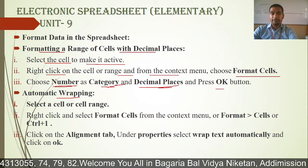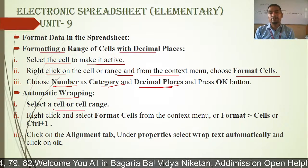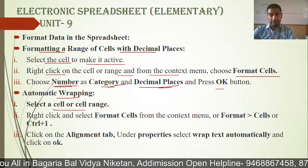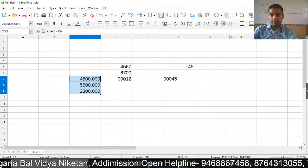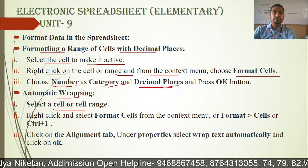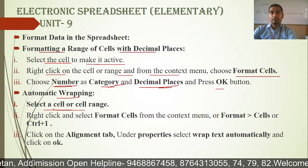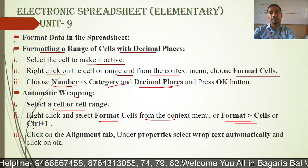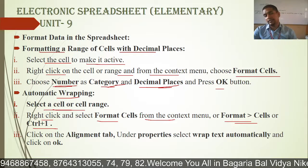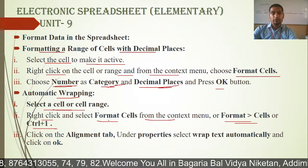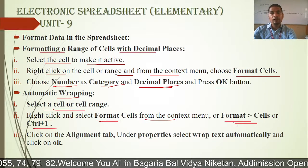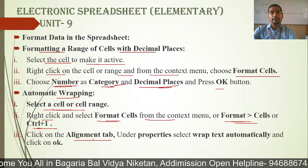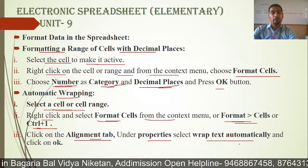Next is automatic wrapping. Select the cell. What is wrapping? Just like when we have to write something in a cell, it will automatically come to the next line — we call it text wrapping. To do this, select the cell and range, right-click and select Format Cell from the context menu, or use Control+1. In the Format Cell dialog box, you will get an option of Alignment. Under Properties, select Wrap Text Automatically and click OK.